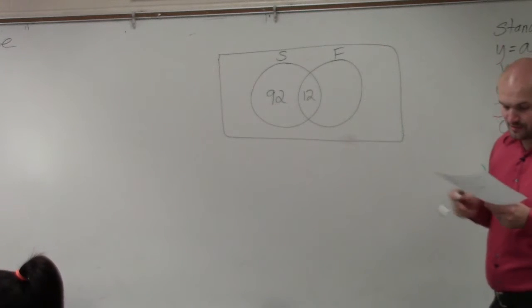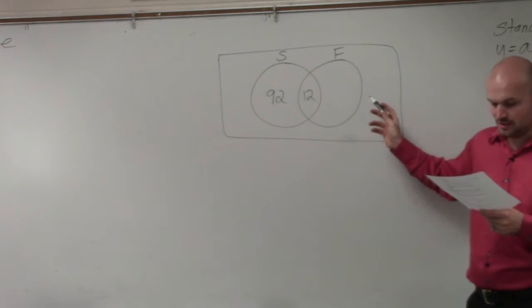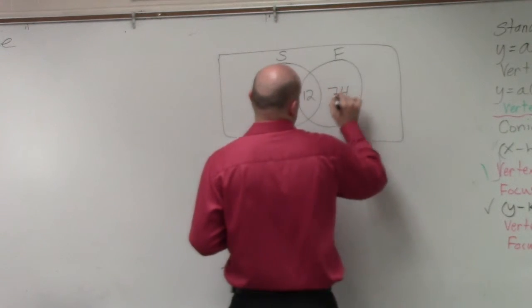On the French side, we have 86 students total. Well, I already have 12 within the circle. So therefore, I need to have 74.